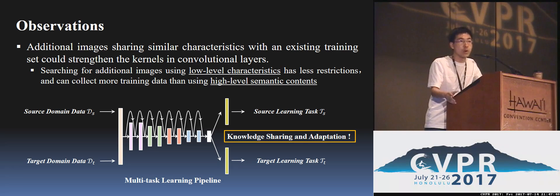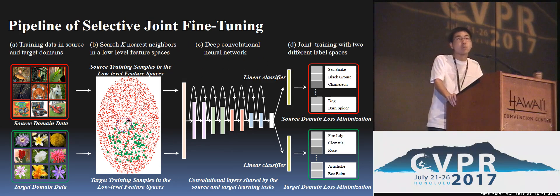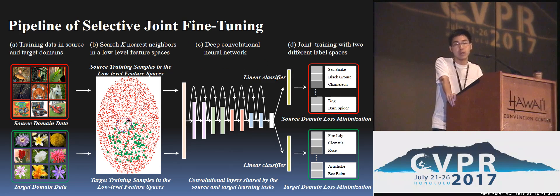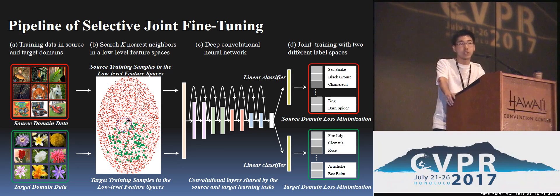Based on these observations, we propose a pipeline called Selective Joint Fine-Tuning. Similar to multi-task learning, we use a single network to learn two different learning tasks. The original learning task with insufficient training data is called the target task, and the additional learning task with a huge amount of training data is called the source task.